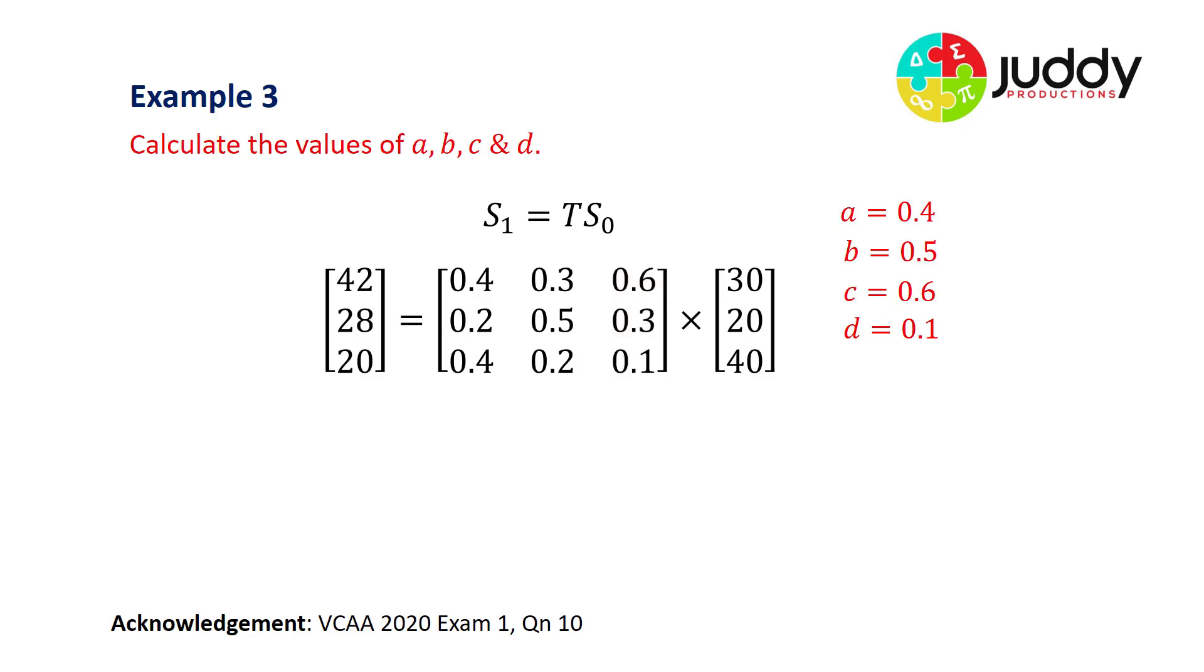To answer this question, it says calculate the values of A, B, C and D. Our answers are A equals 0.4, B equals 0.5, C equals 0.6, and D equals 0.1.